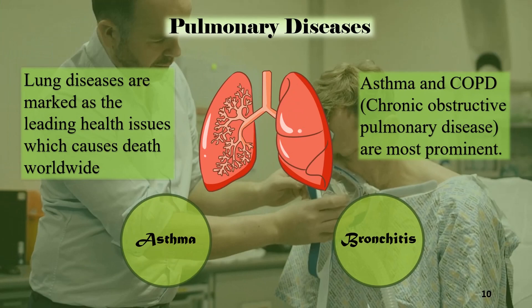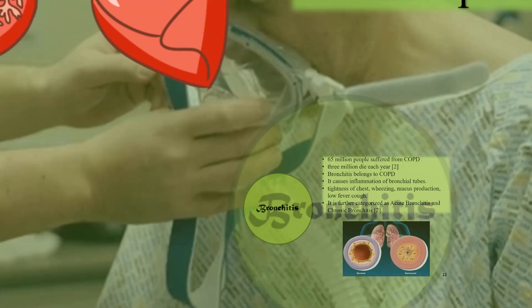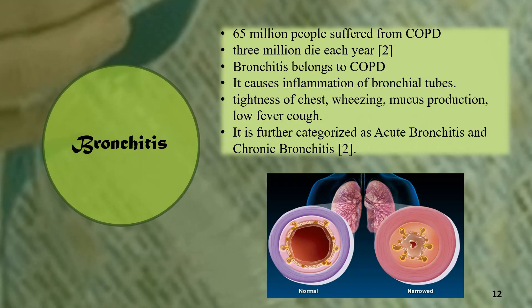Now let's talk about bronchitis, which is a type of chronic obstructive pulmonary disease. 65 million people are suffering from it and 3 million die each year. It is basically the inflammation in the air channel causing chest tightness, cough, fever, and so on. It can be further classified as acute and chronic bronchitis.